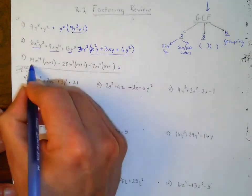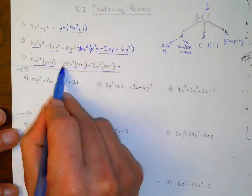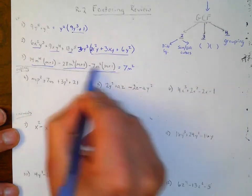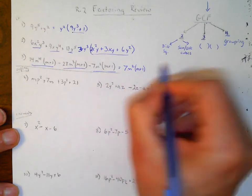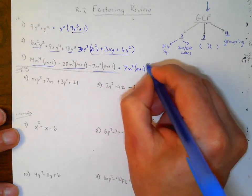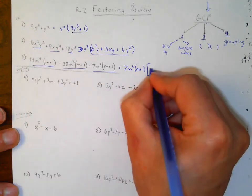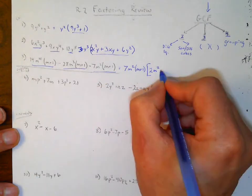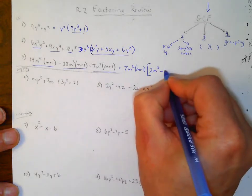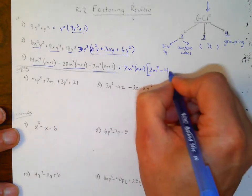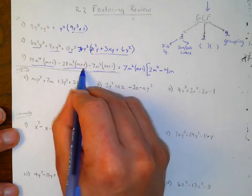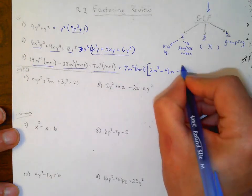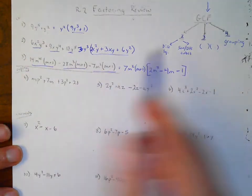This one here has three terms. It looks like I can divide a 7 out, take m² out of all of them, and take an (m+1) out of all of them. What's left after I divide those out? 7×2 needs another m² to give you m⁴, and I already have the (m+1). Minus: 7×4 is 28, m²×m gives m³ with (m+1), and then minus 1 at the end. That's the idea of the greatest common factor.